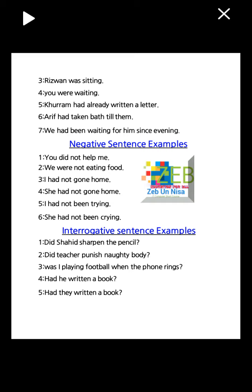Negative sentence examples: number one, you did not help me. Number two, we were not eating food. Number three, I had not gone home. Number four, she had not gone home. Number five, I had not been trying. Number six, she had not been crying.